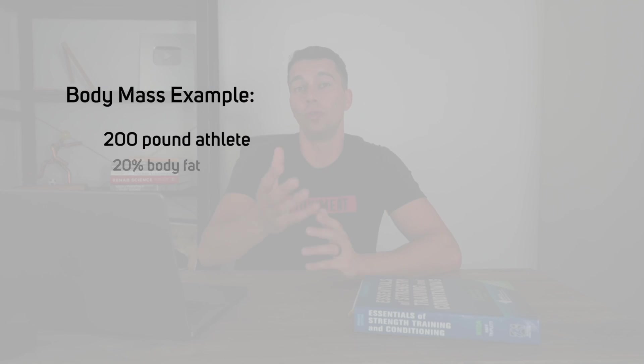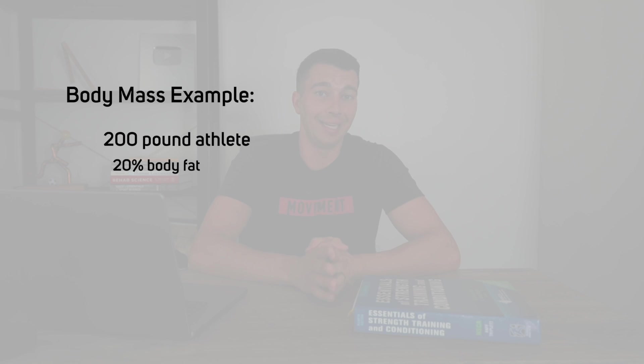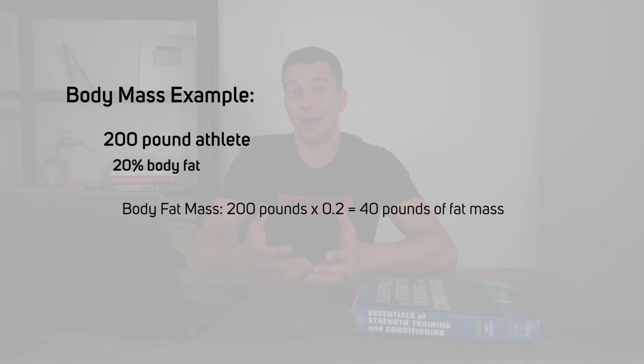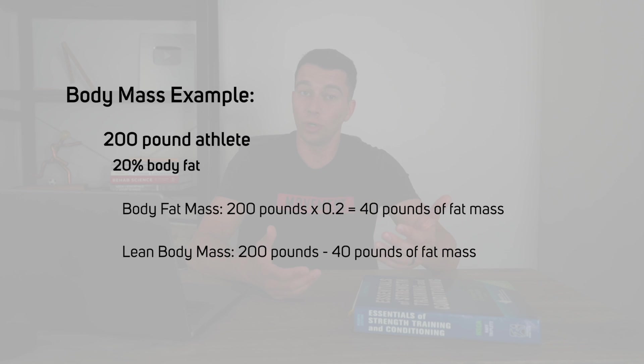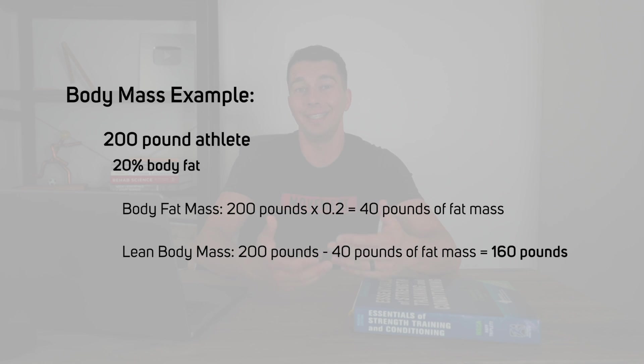Now let's move into the second equation, which is much easier — the Cunningham equation. This equation requires you to know the lean body mass of your athlete. For example, if you have a 200-pound athlete who is 20% body fat, you'd multiply 200 by 20% to get 40 pounds of fat mass, then subtract from 200 to get 160 pounds of lean body mass.